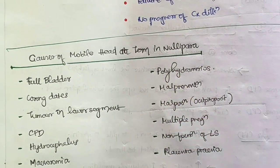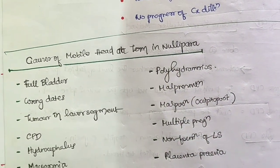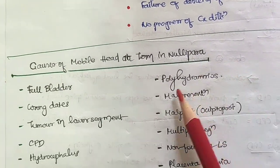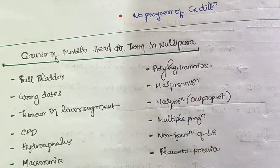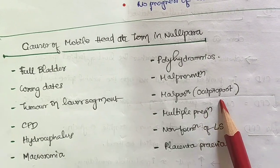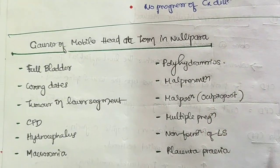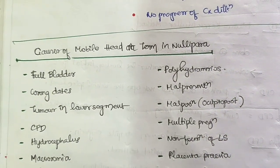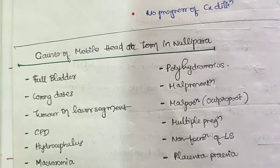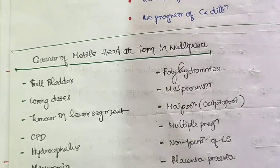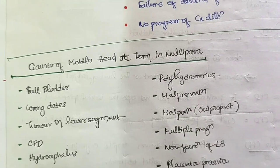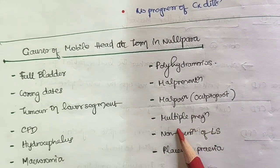Further causes include polyhydramnios — where excess amniotic fluid allows the baby to float — malpresentation, malposition such as occipital posterior position where engagement is delayed, and multiple pregnancy with fetal interlocking.